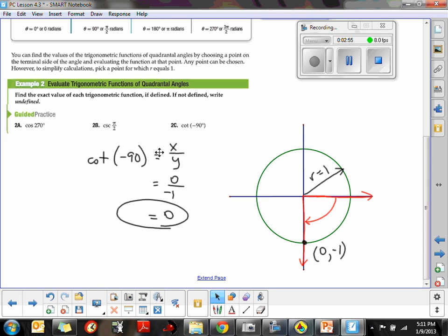And this time we didn't get one that was undefined, but remember in the directions it says, if not defined, write undefined. And that would be if we found the tangent of -90. If we did the tangent of -90, it would be -1 over 0. We'd record undefined. So, done with quadrantal angles.